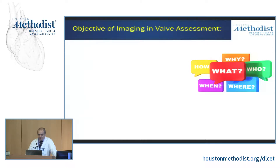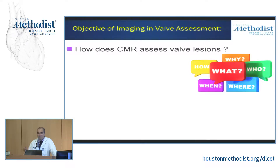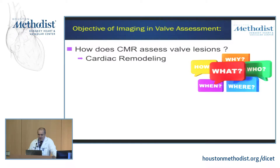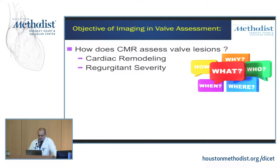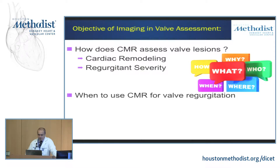This is an example of a case where the patient was referred on for CMR to really try to quantify the severity of the mitral regurgitation. Because the question is: could that left atrial enlargement simply be due to AFib? Or could the AFib, in fact, be due to left atrial enlargement from mitral regurgitation? So here's what we're going to do — walk you through how CMR assesses valve lesions, focusing on CMR's ability to assess remodeling of the heart and to quantify the severity of regurgitation.